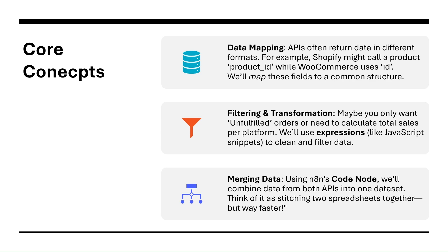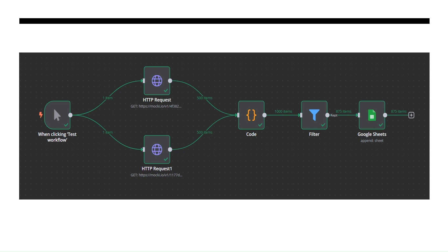Here is the first workflow we are going to build. The first node is a manual trigger — once clicked, it hits the Shopify HTTP request API, and the second hits WooCommerce. Since this is mock data with 500 records each, you can replace these with your own APIs. Next is the code node, where we change column names to a specified format — for example, 'order ID' in Shopify becomes 'ID', and WooCommerce fields are similarly unified into the structure we want to store in Google Sheets.